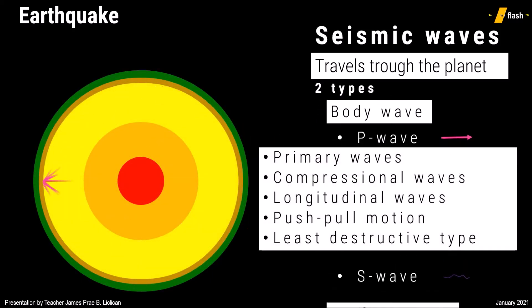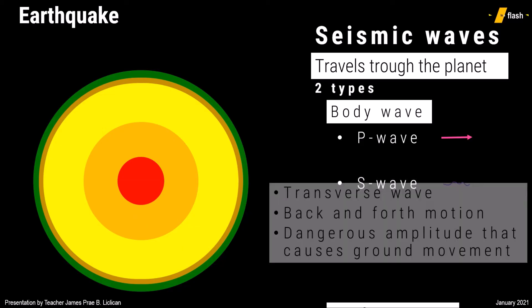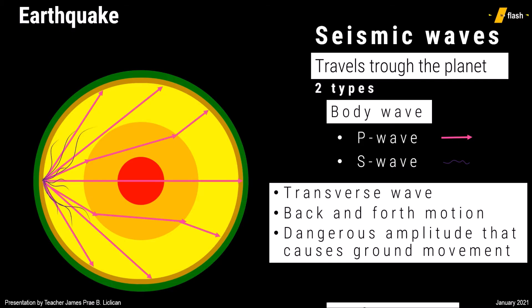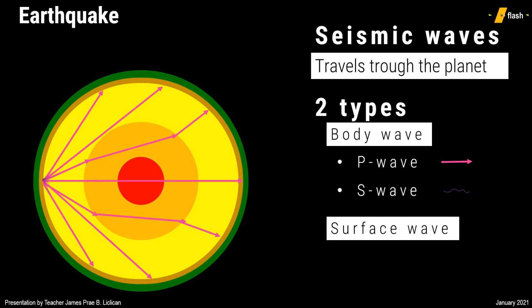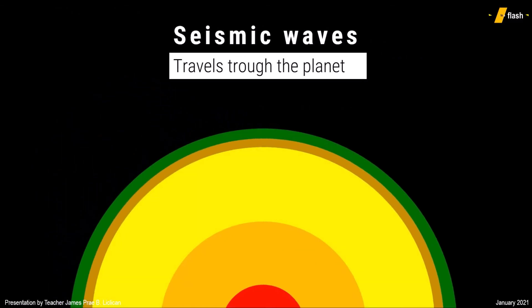P waves travel the fastest at 1.5 to 8 kilometers per second, but have the weakest energy, while S waves travel slower but with greater strength. Although the S wave, or secondary wave, is stronger, it can only travel through solid material, while the P wave, or primary wave, travels through both solid and liquid phases of matter. Surface waves can be an L wave or R wave. The L wave, or Love wave, is felt once body waves have already passed. The R wave, or Rayleigh wave, comes the slowest but is the most destructive type of wave felt during an earthquake.